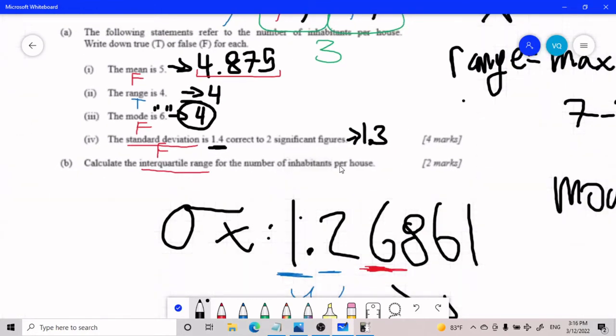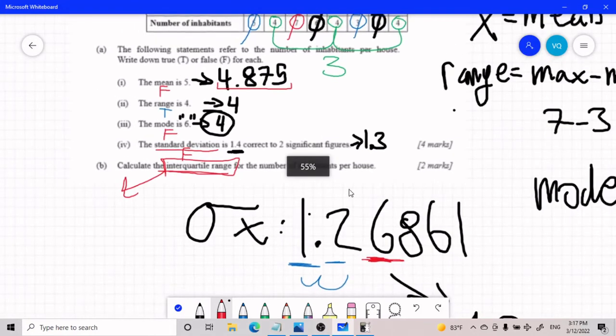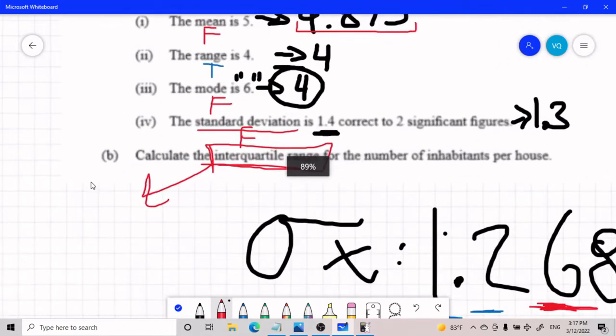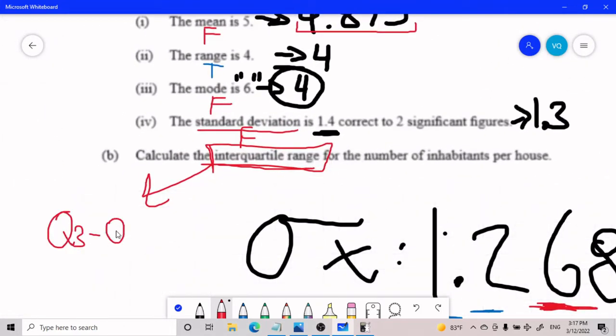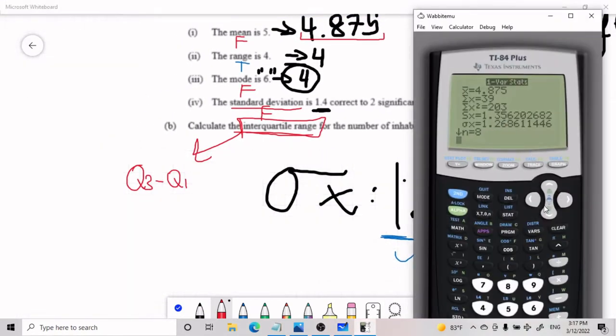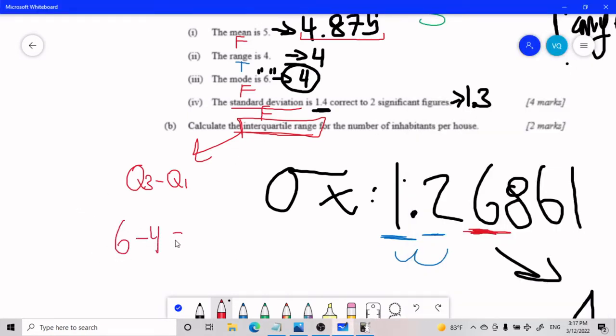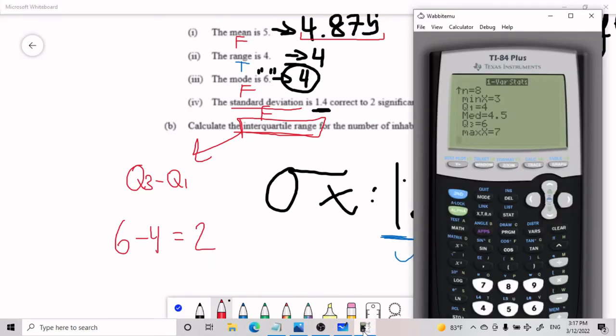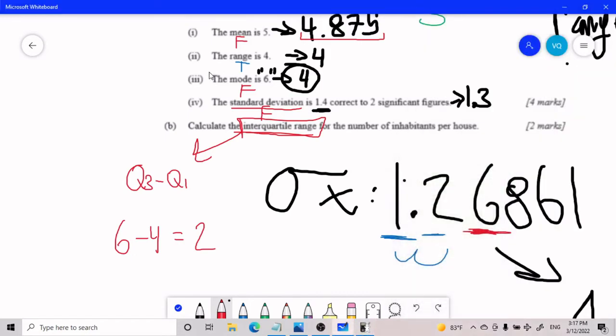Now we can calculate the interquartile range for the number of inhabitants per house. What the hell is the interquartile range? The interquartile range is in your formula booklet. So if you happen to forget it, you can always remind yourself there. In your formula booklet, we have Q3 minus Q1 is your interquartile range. So the swift way, the quick way to do this is scrolling down in your menu, you can scroll down, there's more information. And looking at Q1, looking at Q3, we go ahead and plug in, we have 6 minus 4. My IQR is going to be 2. Yes, that's literally it.